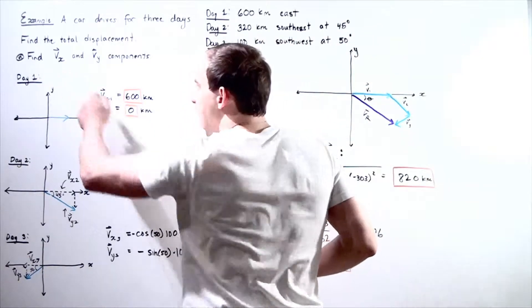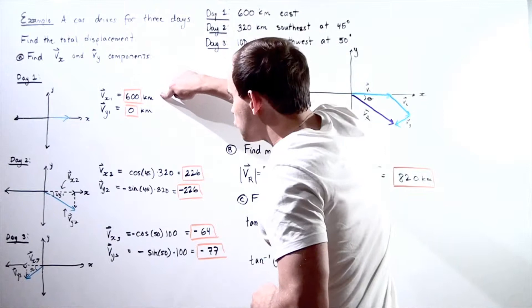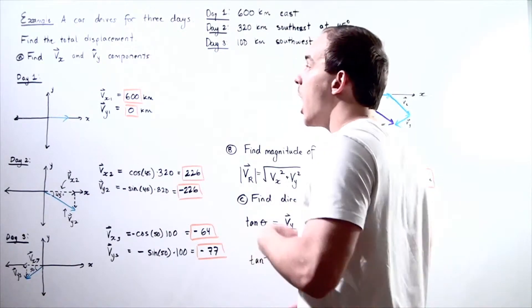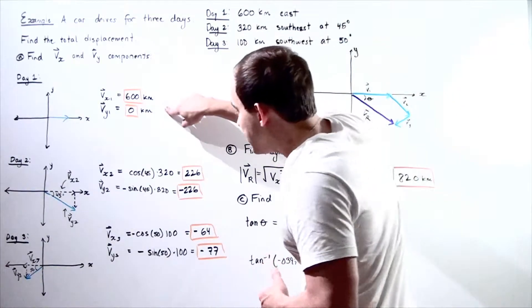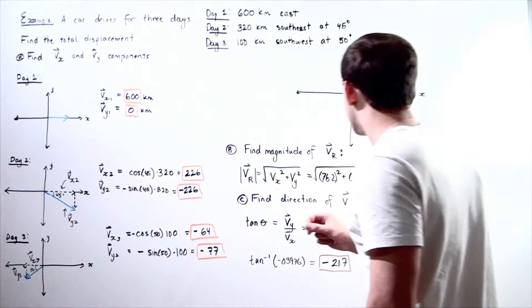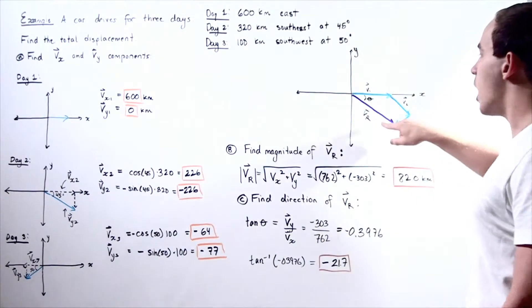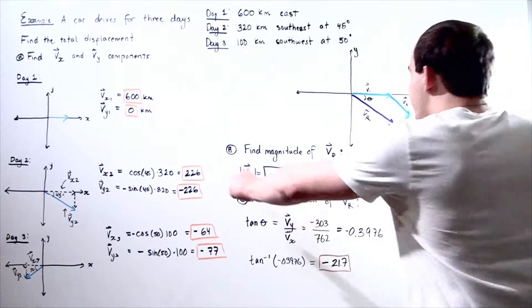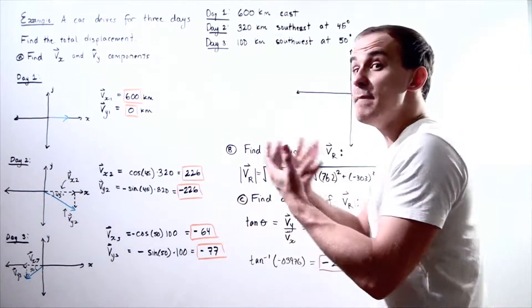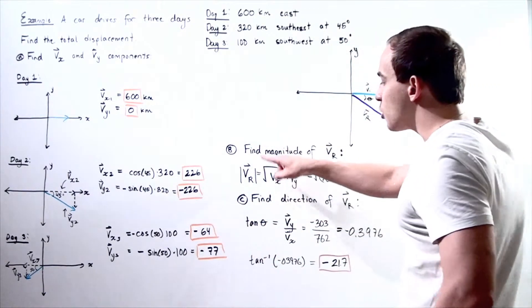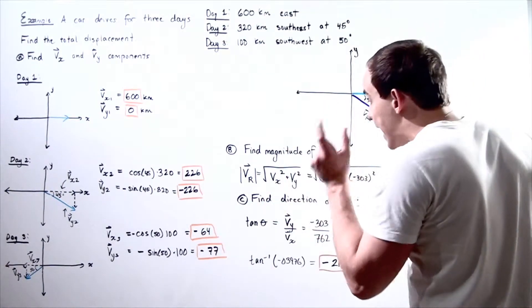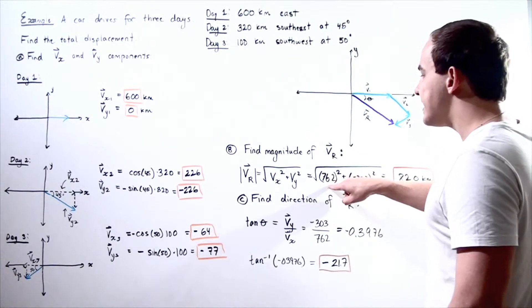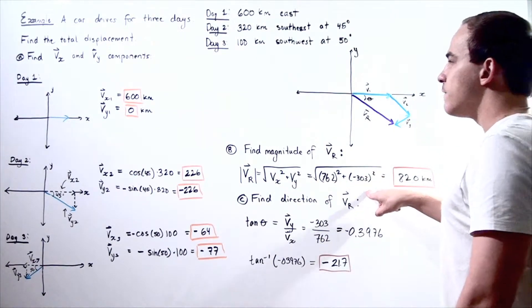Now we sum up Vx and Vy. For the x-direction: 600 + 226 − 64 = 762 kilometers. For the y-direction: 0 + (−226) + (−77) = −303 kilometers. These are the total components of our resultant vector along the x and y directions.